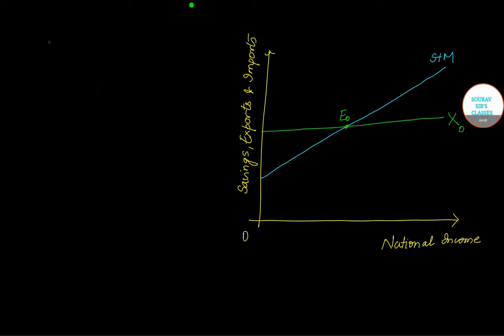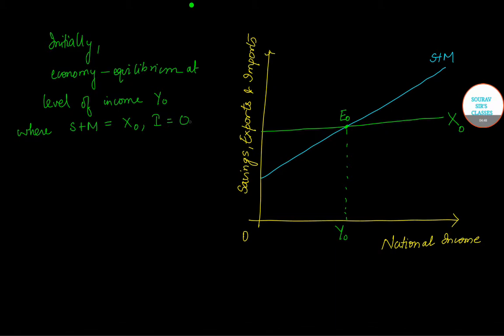Now let us see initially what is the situation. Initially the economy is in equilibrium at the level of income. Let us mark it - we are getting intersected at Y₀, at level of income Y₀. What is happening at Y₀? This S plus M function is equal to X₀ and our investment is zero. This is the initial situation.